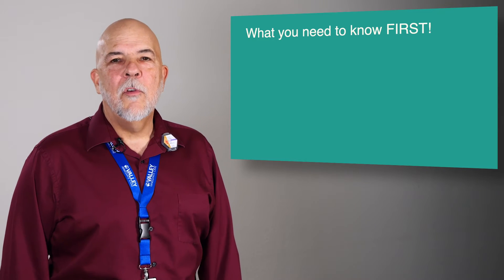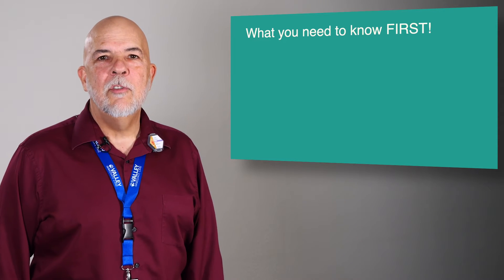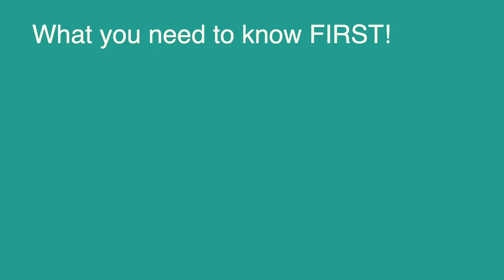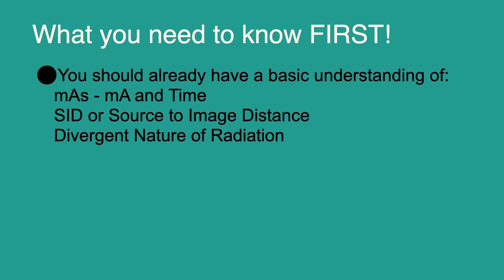A couple things you need to know first, and this is similar to the presentation on the inverse square law. Same things you need to be familiar with. You need to have a basic understanding of mA and time, source to image distance, and the divergent nature of radiation. We'll give a very brief description of each.